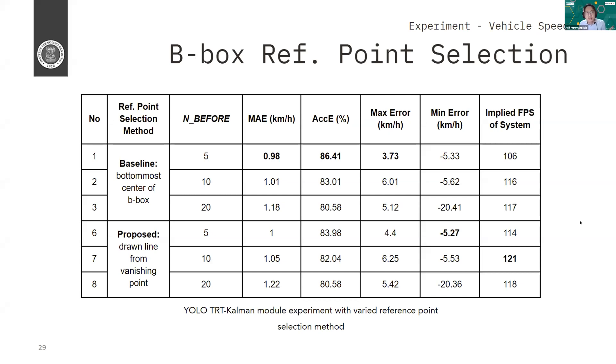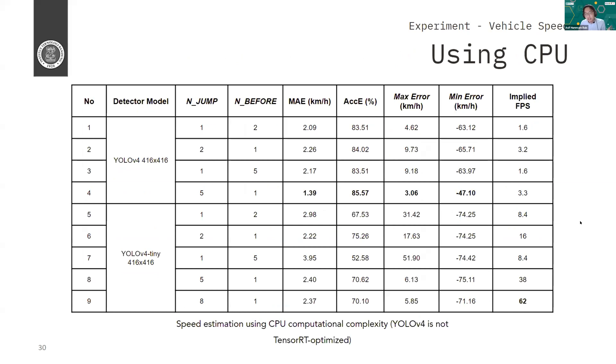Okay. So further addition. And then if you use YOLO without TensorRT and only CPU computation, this is where using frame skipping makes it better. So as you can see, if we don't employ any frame skipping techniques here, meaning that n_jump is 1, we only have FPS of 1.6 FPS using the YOLO version 4. And even if you use the YOLO version 4 tiny, we have only 8.4 FPS. But if we employ 8 as the frame skips, meaning we only have 50 divided by 8 FPS of video, we can have an implied FPS of 62 where the MAE is still actually kind of the same, or even actually it's better than if we use n_jump as 1. We just have 2.37 km per hour with an acceptable error of 70.1%.